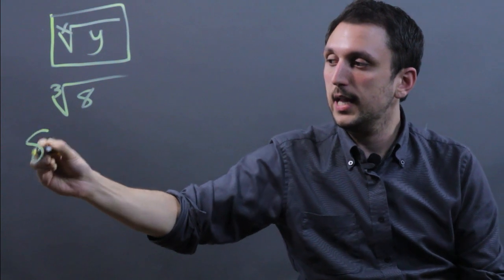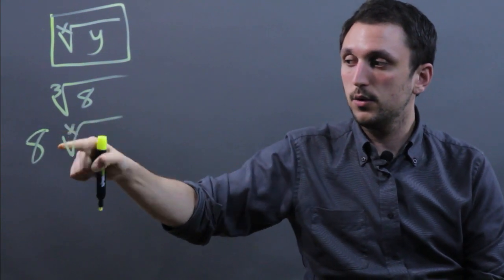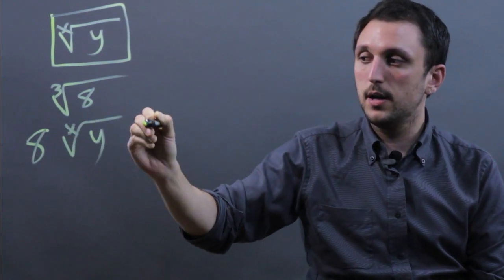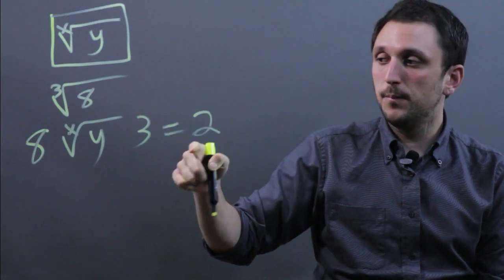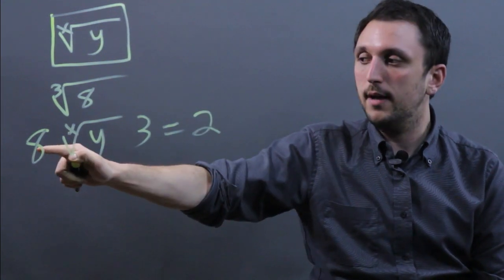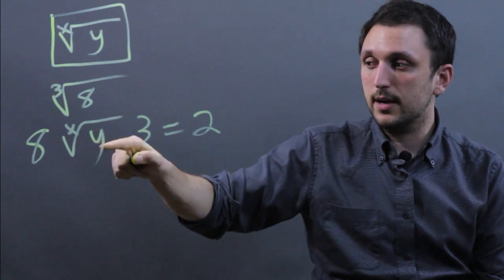We're actually going to type in 8, and then you hit the x root y button, then you hit 3, and you'll get 2. So in a sense, you're actually hitting the y value first, then the x root y button, then the x button.